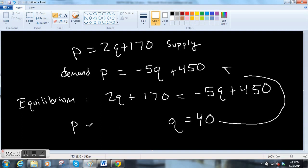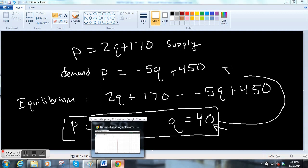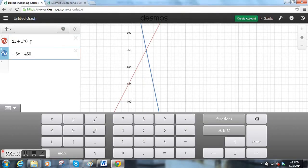So q equals 40, and then you can plug it back into either one of these equations and you get the price equals 250. So when does the supply equal the demand? Right here, when the price is 250 and you're selling 40, I guess that's 40 a week.